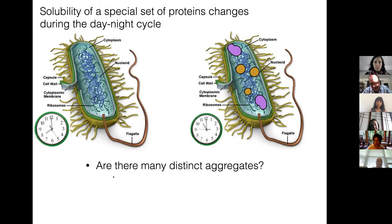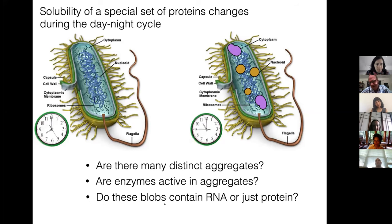Things we don't know: are there actually many distinct aggregates or are some of these proteins all aggregating together? Are the enzymes active when they're in the aggregates? We still don't know. And do these actually, similar to the eukaryotic stories, do they contain RNA or is it really just protein? We don't find a lot of RNA binding proteins, but that's a question. And what is the molecular mechanism? So in the spirit of just trying to be totally upfront about our ignorance, this is all we don't know.